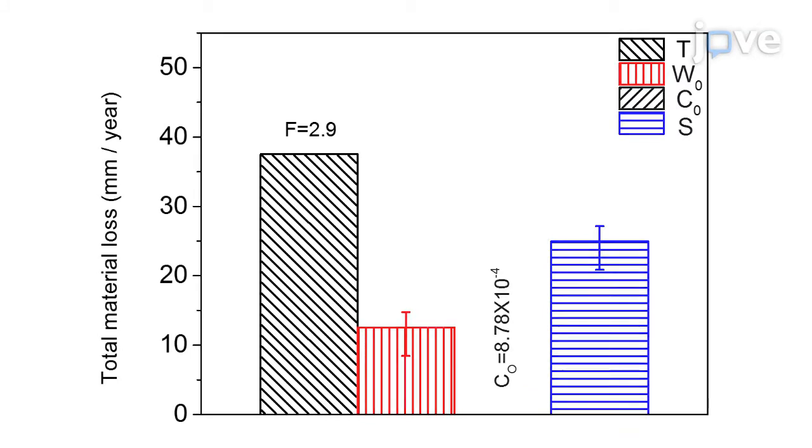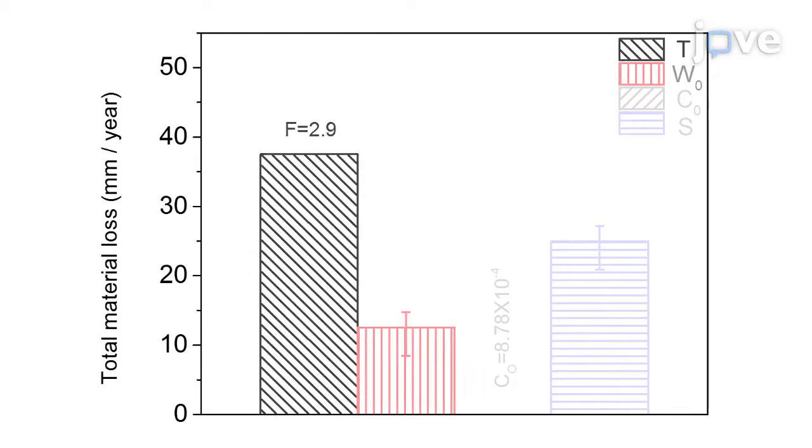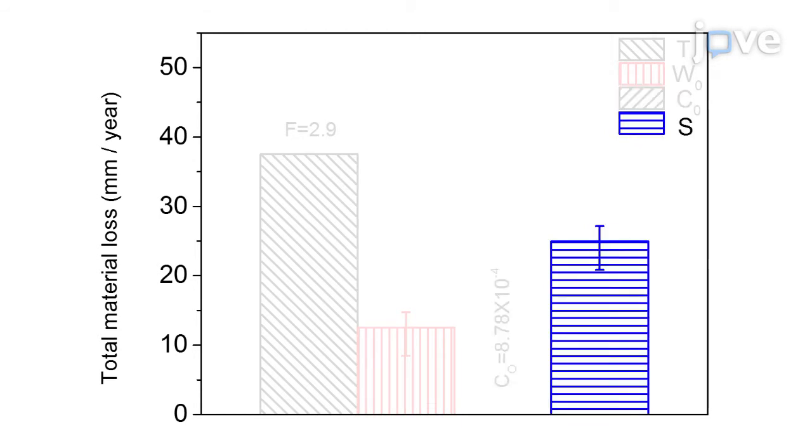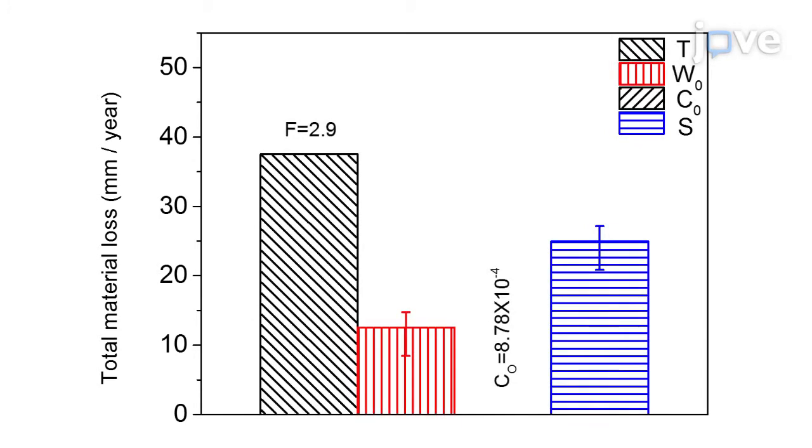Here a summary of the tribo-corrosion rate and wear corrosion synergy of the aluminum thin film sample components used to calculate the total material loss are shown.